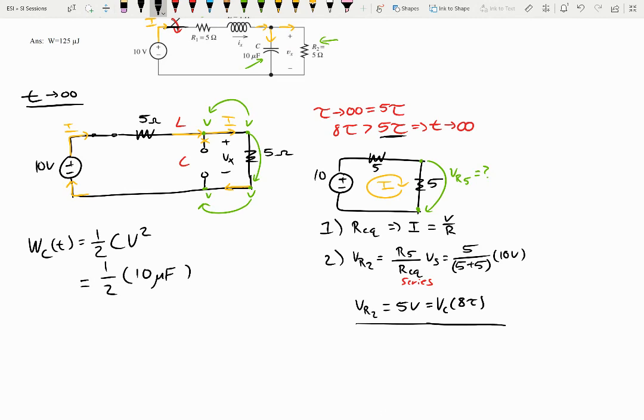It'll be 1 half times 10 microfarads. And voltage we just found was 5 volts squared. And remember, we want to keep this in a base unit. So, times 10 to the negative 6 farads and 5 volts squared.